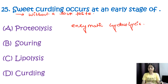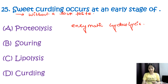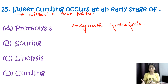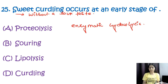This process is different from souring, which involves fermentation of lactose to lactic acid leading to a sour taste in dairy products. Lipolysis leads to the breakdown of fats, and curdling is typically associated with coagulation of milk proteins. You can comment the correct option for this question below.